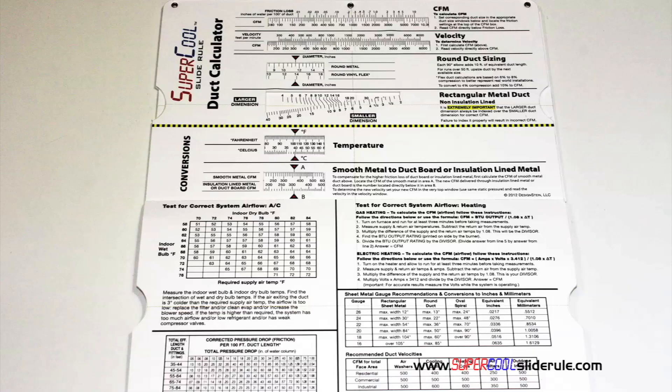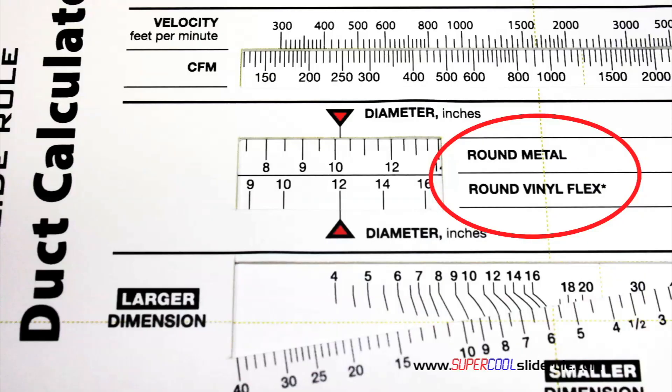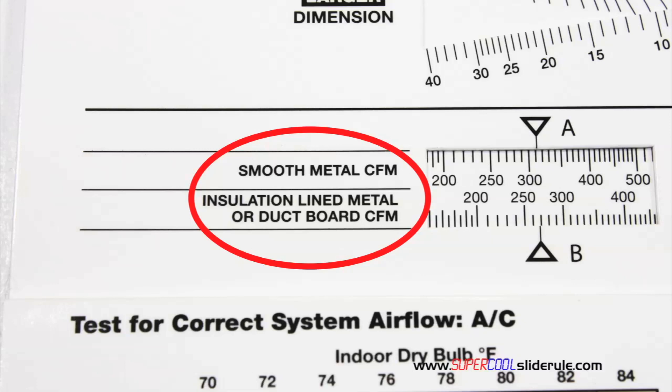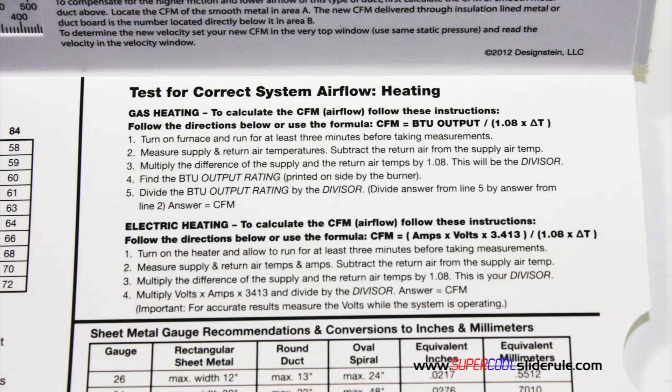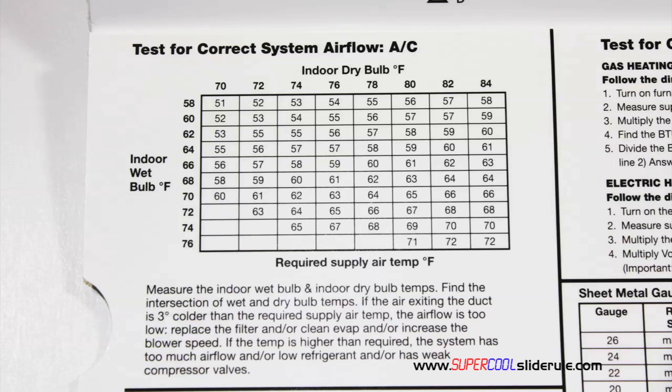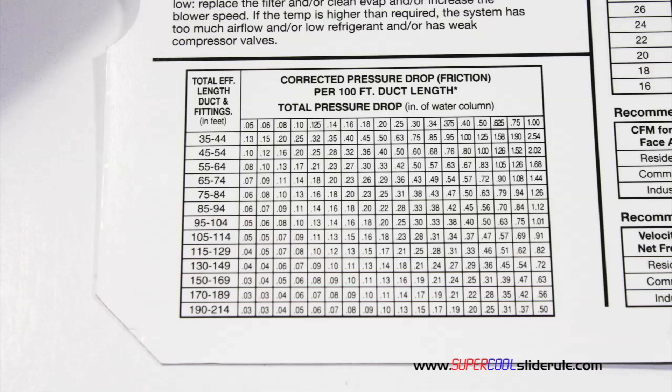Inside is packed with even more information. It performs sizing of both metal and flexible duct. It has the only direct reading conversion from smooth metal to insulated liner metal we've ever seen. The majority of technicians have never been taught that if the insulation is on the inside of the ductwork, you cannot size it with a regular duct calculator. It has step-by-step directions for determining airflow through a gas furnace, electric furnace, or an air conditioning unit. It has pressure drop multipliers for ductwork, as well as recommended velocities.